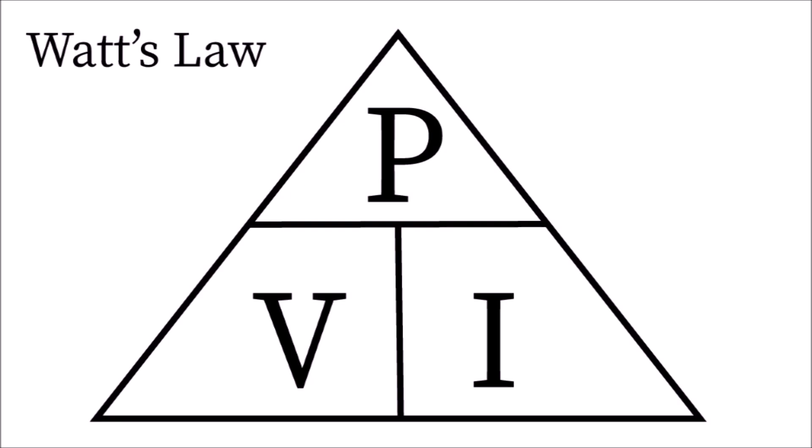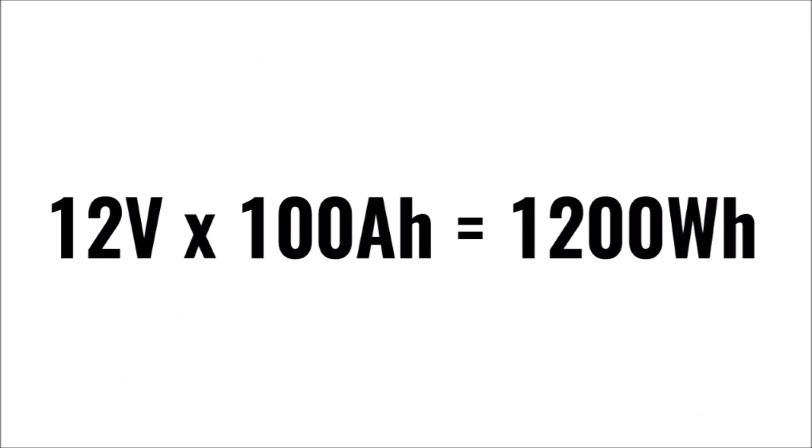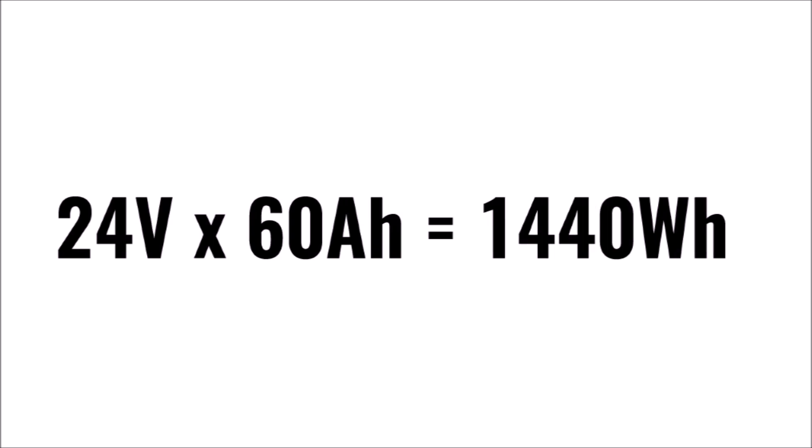To do that, you multiply the amp hour rating by the voltage of the battery. For example, a 100 amp hour 12 volt battery would have 1200 watt hours. With that number, you can compare it properly to a 60 amp hour 24 volt battery, which would have 1440 watt hours.